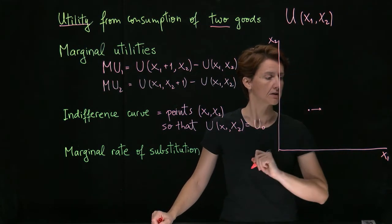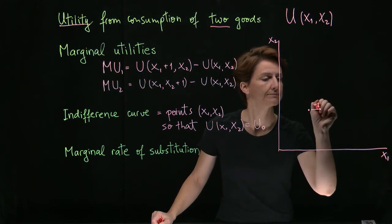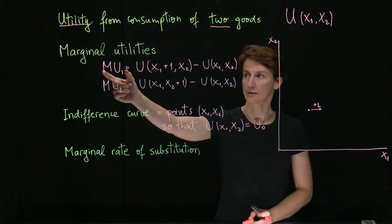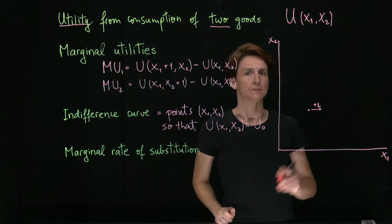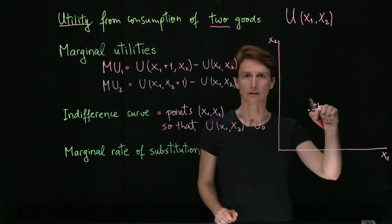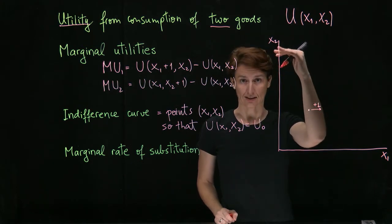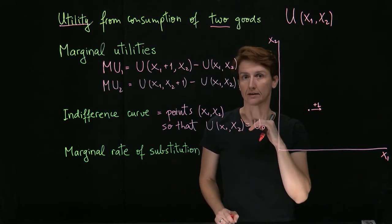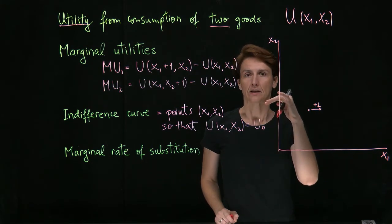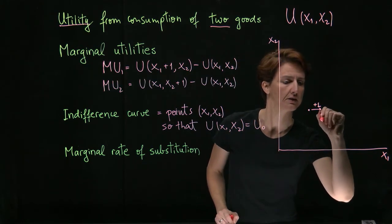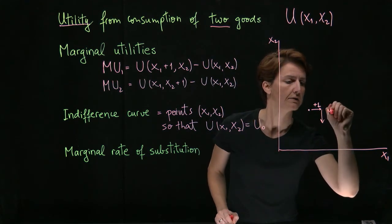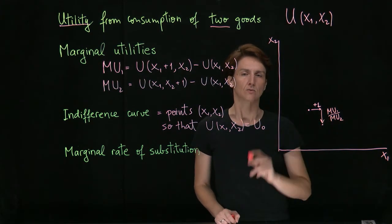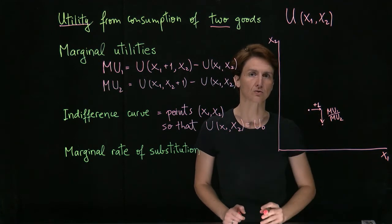Suppose that we were to increase quantity of good one by one unit. What would happen to the value of utility? Well, by definition, utility would increase by mu1. Okay. So in order to come back to the same indifference curve, we will have to decrease utility by mu1 through a decrease in x2. Every time we decrease x2 by one unit, we decrease utility by mu2. And so in order to decrease utility by mu1, we will need to decrease good 2 by mu1 over mu2.